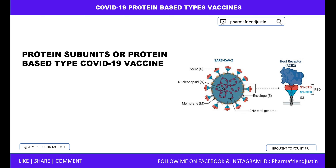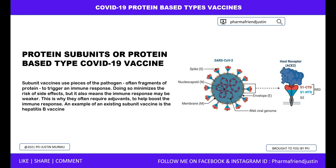Protein subunit vaccines are protein-based COVID-19 vaccines. Subunit vaccines use a piece of the pathogen — often a fragment of the protein — to trigger an immune response. Doing so minimizes the risk of side effects, but it also means the immune response may be weaker. This is why they often require an adjuvant to help boost the immune system. An example of an existing subunit vaccine is the hepatitis B vaccine.